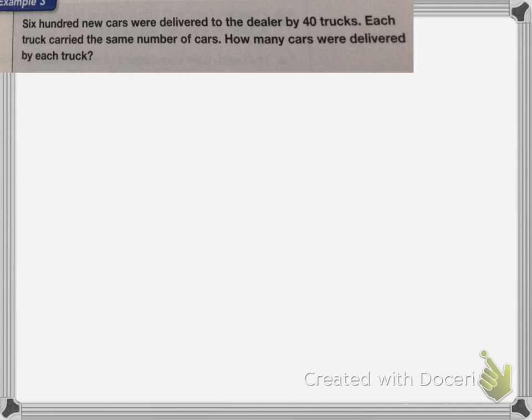In this one, 600 new cars were delivered to the dealer by 40 trucks. Each truck carried the same number of cars. How many cars were delivered by each truck? Again, you have the number of groups plus the number in each group, which equals your total.